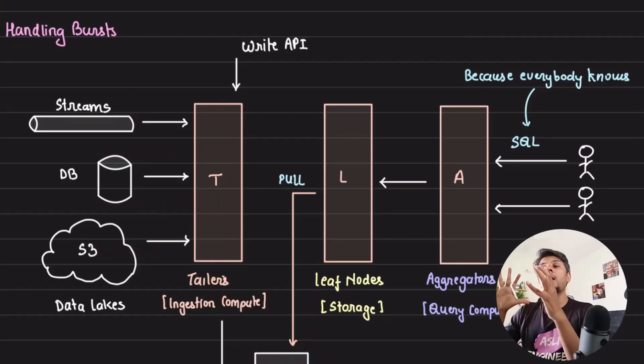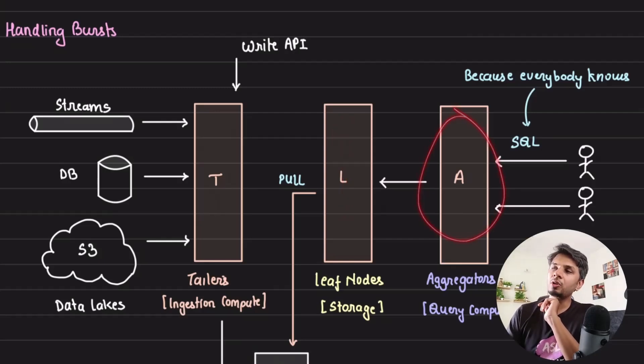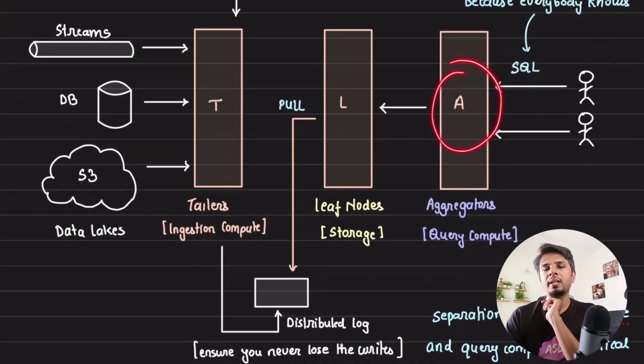If you have a large amount of data or the storage is large, then you can just scale up your leaf nodes if you require. And if you have a large amount of user queries coming in, then all you need to do is scale up your aggregator nodes.